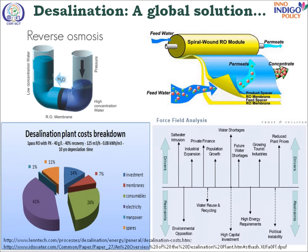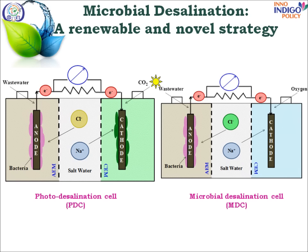But the desalination plant breakdown shows about 41% of electricity is consumed by the process. So the alternative solution is microbial desalination, which is renewable and novel.